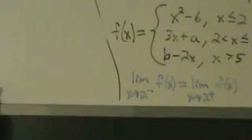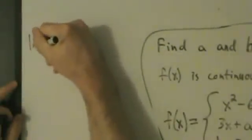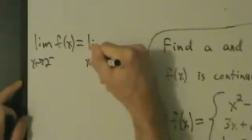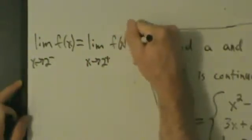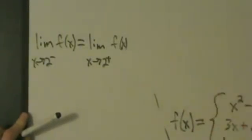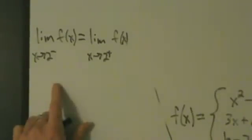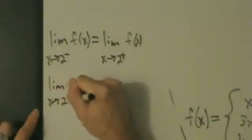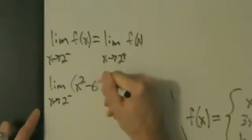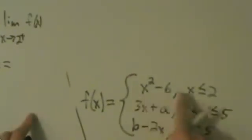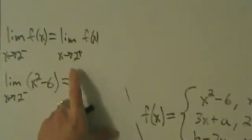So what we need is: the limit as x approaches 2 from the left of f of x equals the limit as x approaches 2 from the right of f of x. The left-hand limit uses this first piece, x squared minus 6, because as x approaches 2 from the left, x is always less than 2.